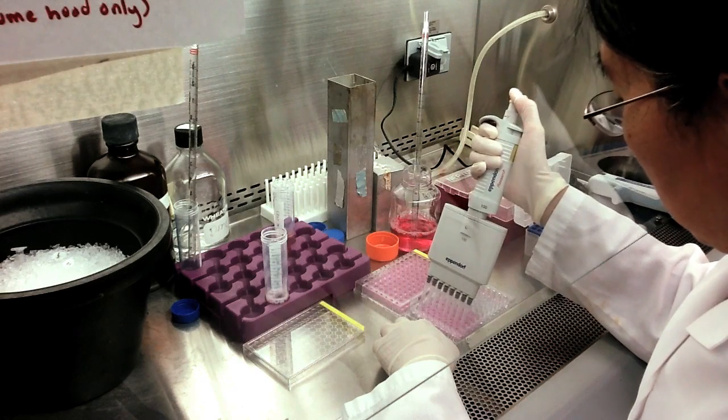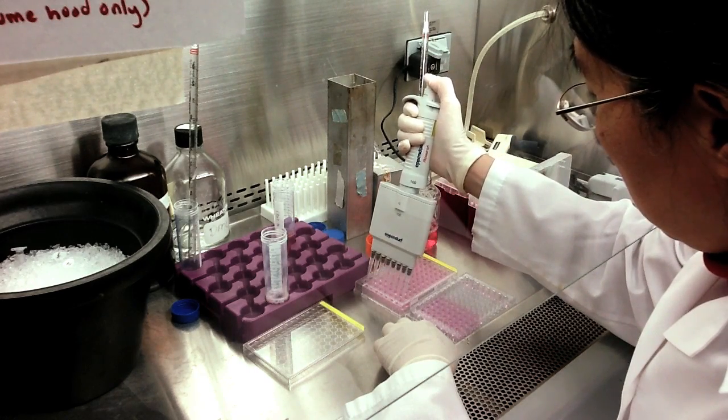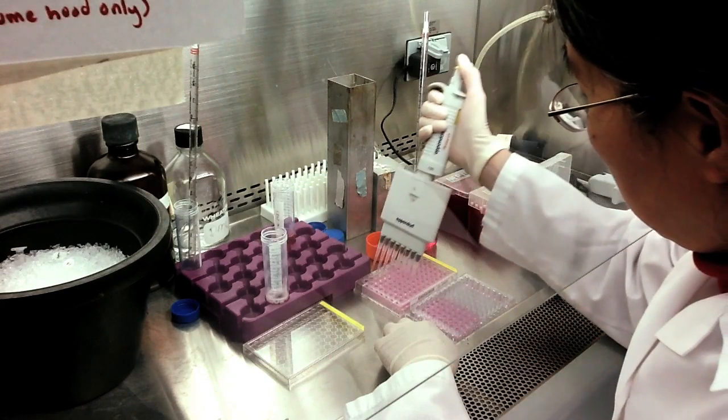50 microliters of serially diluted FGFs are then transferred from the serial dilution plate to its corresponding well in the cell assay plate.